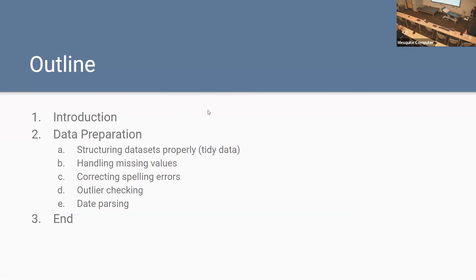My outline for this talk is pretty straightforward. After a short introduction, I'll talk about the different activities that make up the majority of preparing data for analysis — certainly not an exhaustive list, but the five I see most commonly: structuring data sets properly and what is called tidy data, handling missing values, correcting spelling errors, outlier checking, and date parsing. Then I'll end with a conclusion slide.